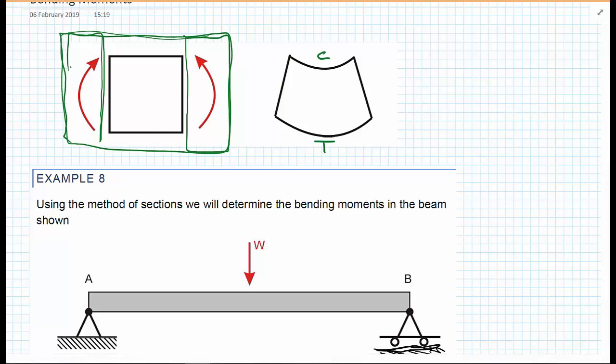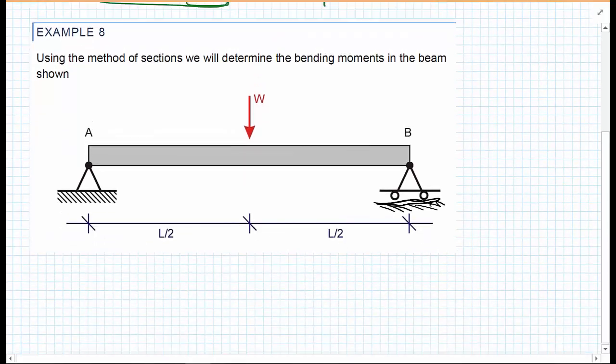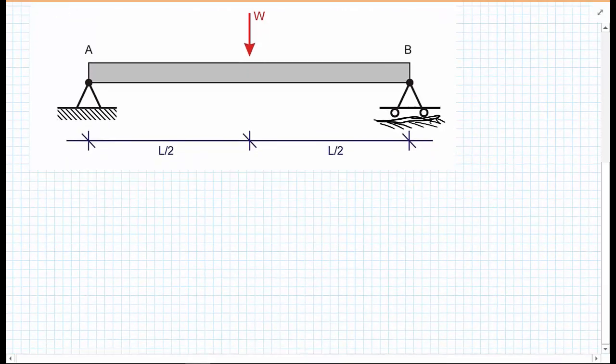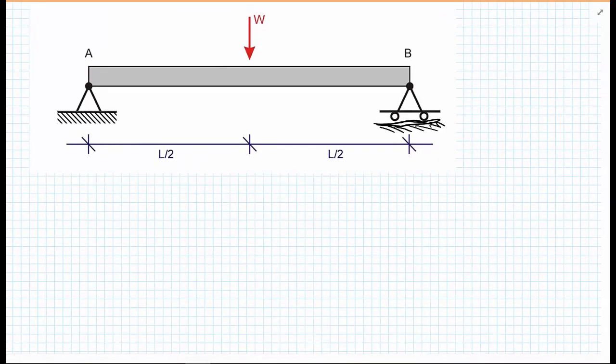We're going to go straight into an example. Like we've done with shear forces and before that with trusses, we use the method of sections to determine the bending moments as we go along a beam. The first thing we need to do is calculate the reaction forces, so we consider the rigid body equilibrium and draw our free body diagram.